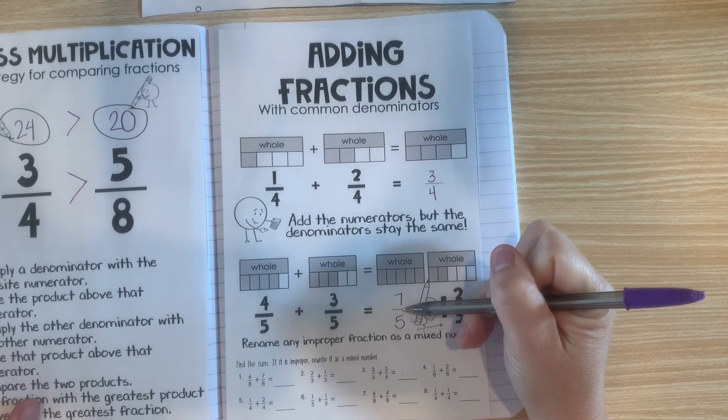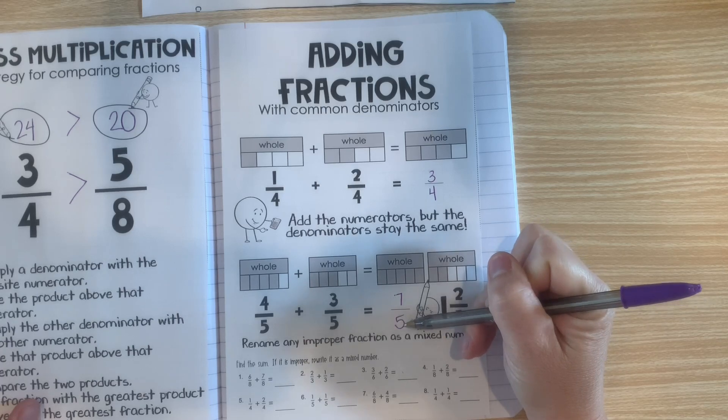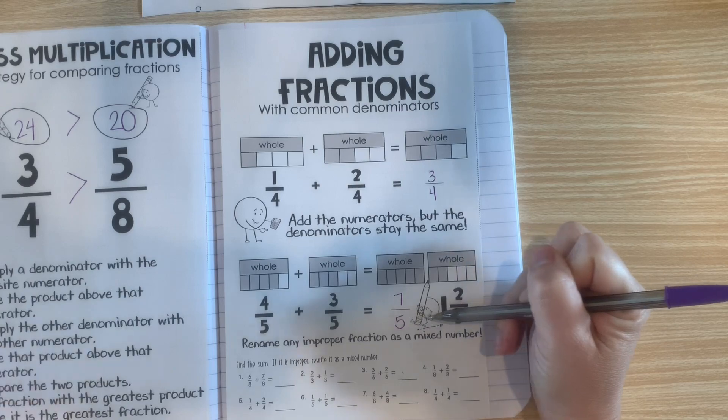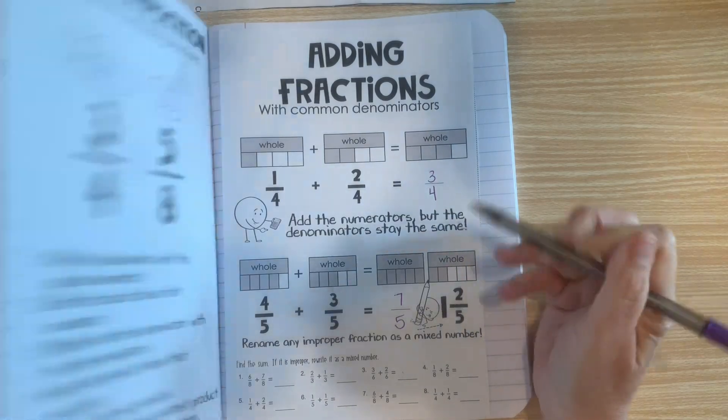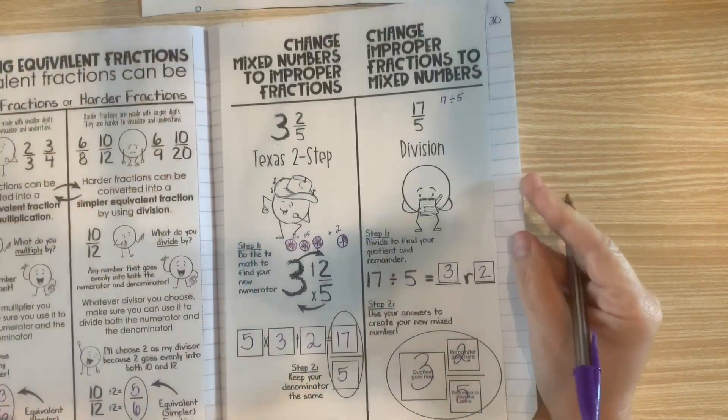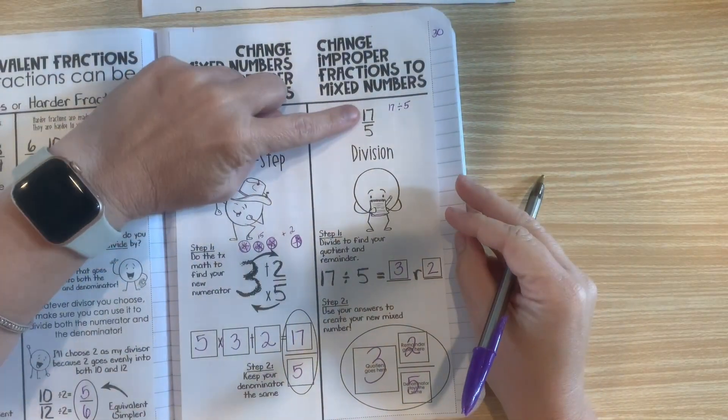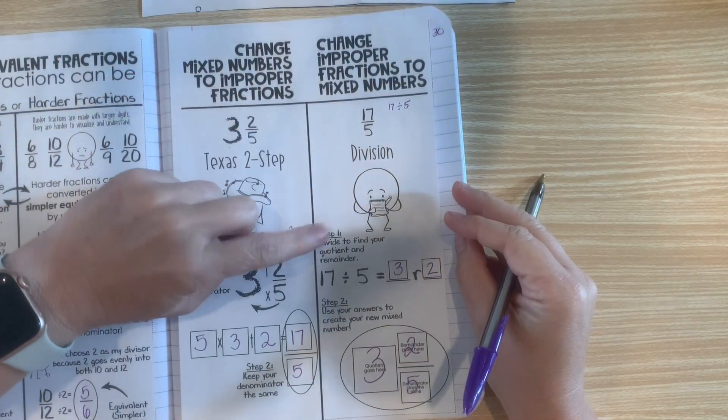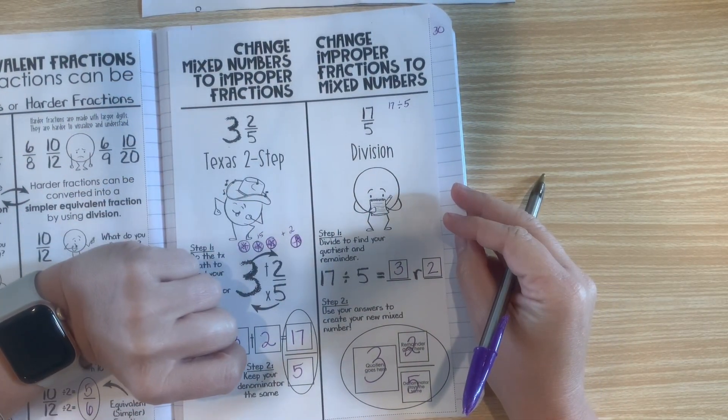Now we have an improper fraction of 7 fifths. We can change that improper fraction into a mixed number. If you remember, we learned how to do that a while back. We can change an improper fraction to a mixed number by doing the division.